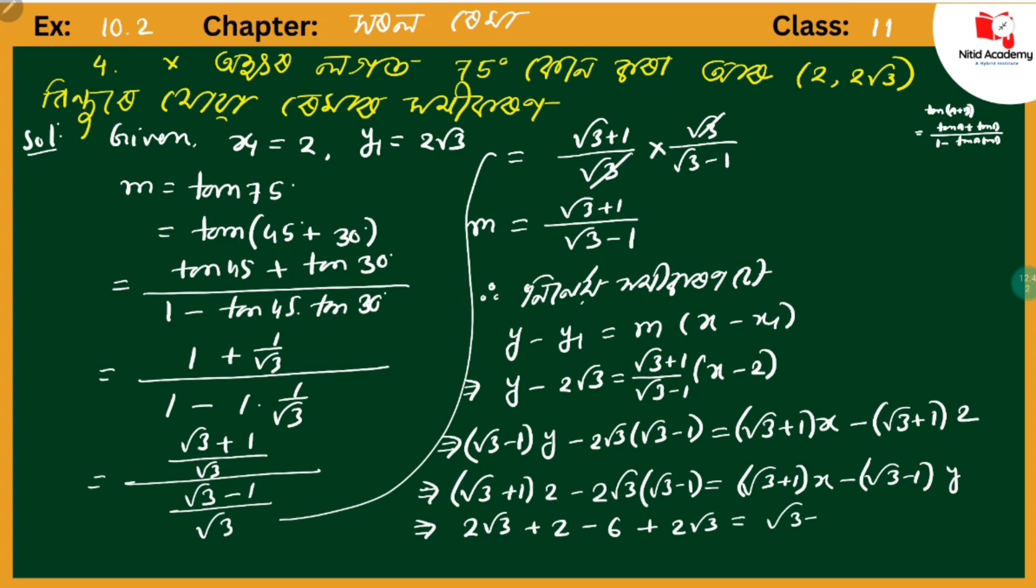Moving x terms to the right and y terms to the left: The equation becomes (√3 + 1)x - (√3 - 1)y on one side.